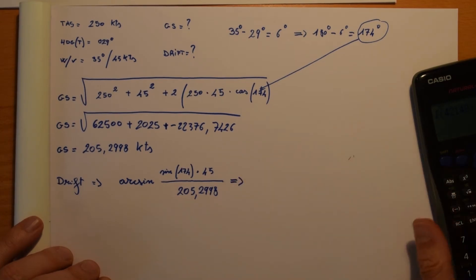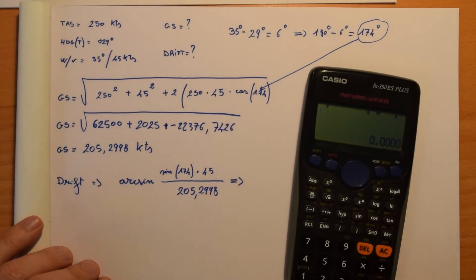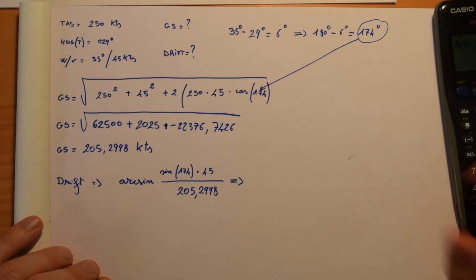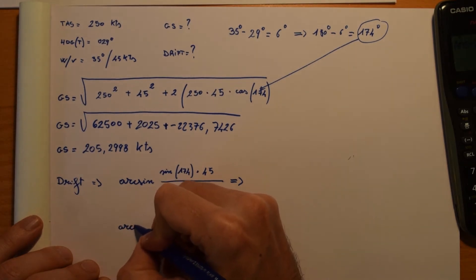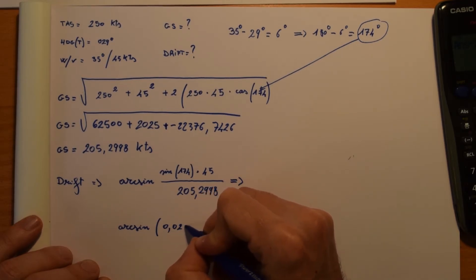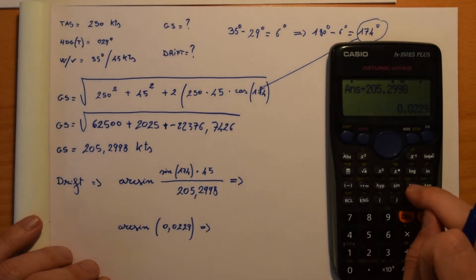So let's see: sine 174 plus 45, then we divide by 205.2998. Arc sine of 0.0229 and the final result is going to be...